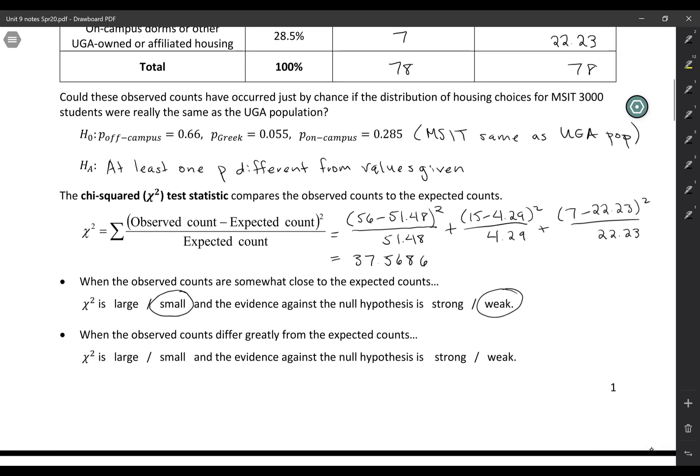Whereas if the observed counts differ greatly from the expected counts, this difference, observed minus expected, is going to be large. And if your data is really different from what you expected it to be, that's going to be strong evidence against the null hypothesis.